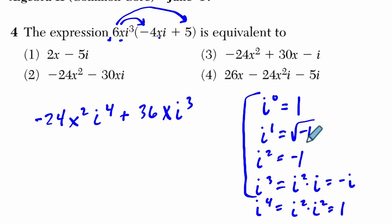So i⁴ is 1, i⁵ is the square root of -1, i⁶ is here, and so on and so forth. And that tells me, in this problem, I can rewrite this as -24x², i⁴ is just 1, and then minus 36x, because i³ is -i. I'm sorry, it's like that: -36xi.